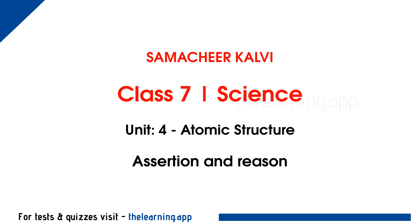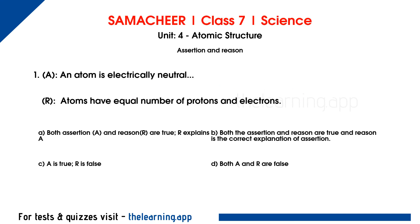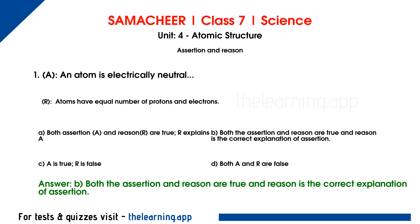Assertion and reason. Assertion: An atom is electrically neutral. Reason: Atoms have equal number of protons and electrons. Correct answer is B — both the assertion and reason are TRUE, and reason is the correct explanation of assertion.